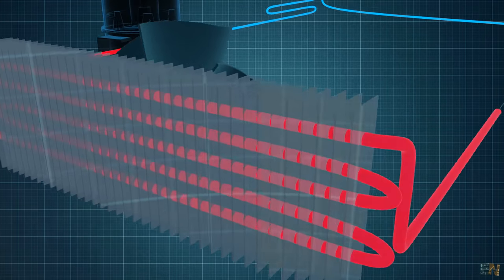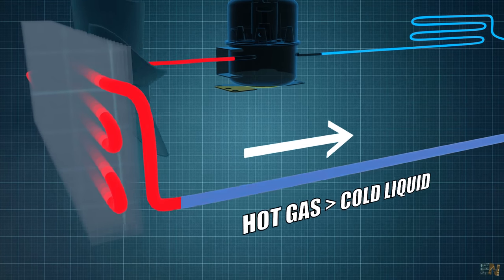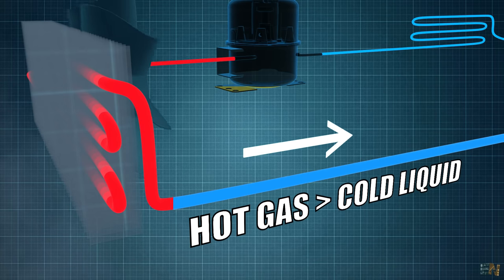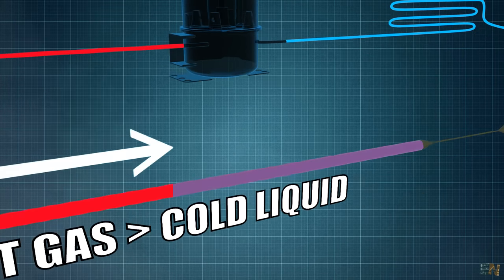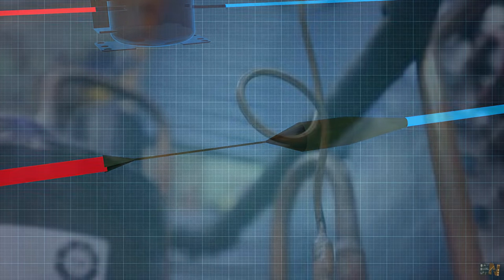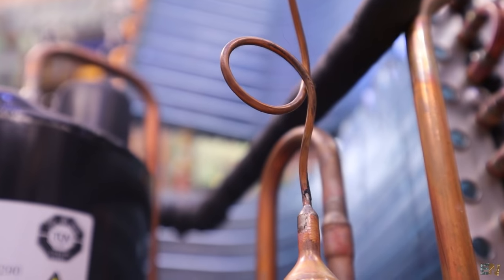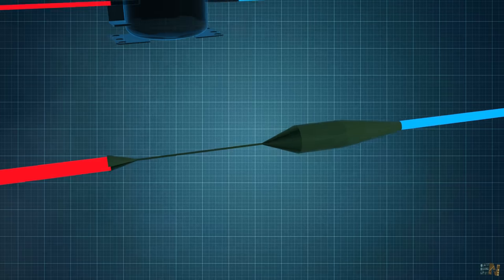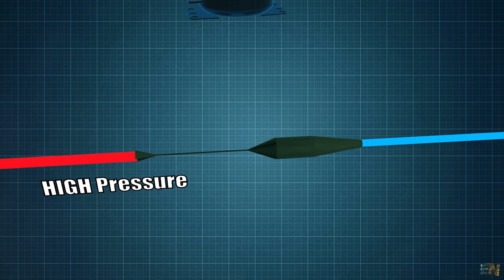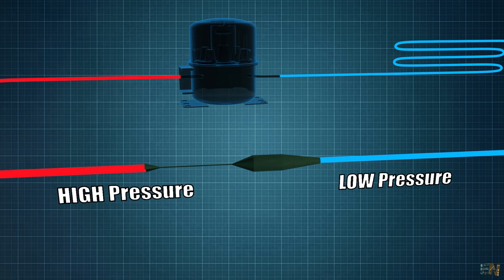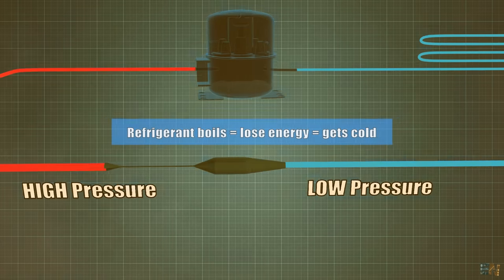Now at the output of the condenser we have that expansion valve which in our case is based on a capillary tube which is just a long copper tube with a very small internal diameter in order to restrict the refrigerant flow. If the flow is restricted, like this we can separate the high pressure on one side and the low pressure on the other side. But when the pressure drops, the refrigerant will turn back into a gas.